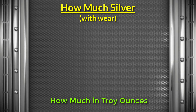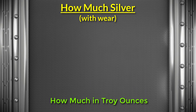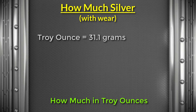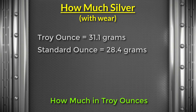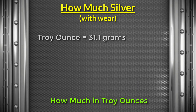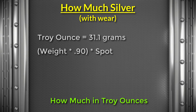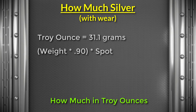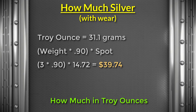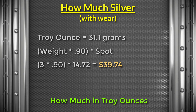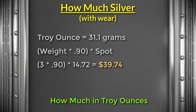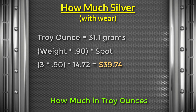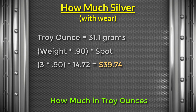One more useful formula is to know the weight in troy ounces. A troy ounce is 31.1 grams, which is different than a standard ounce, which is 28.4 grams. If you have the troy ounce information, multiply the weight by 0.90 — that gives you the amount of silver — then multiply by the spot price. So for 3 troy ounces, that's 3 times 0.90 times $14.72, which equals $39.74 at spot price.